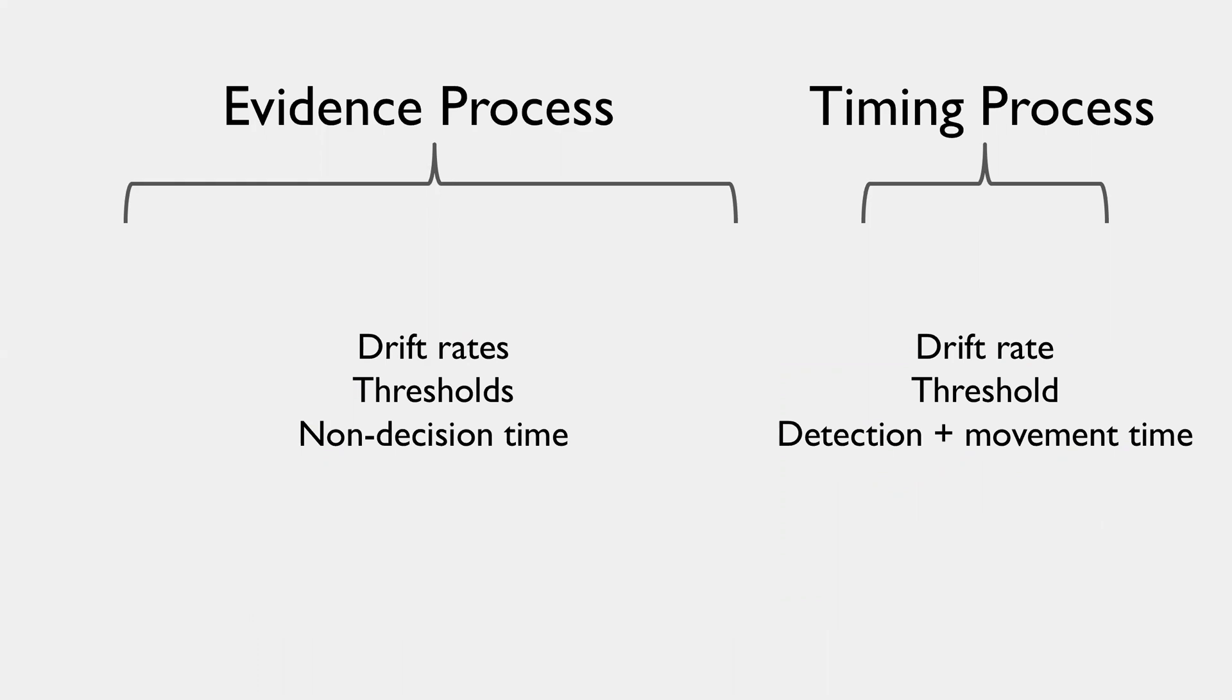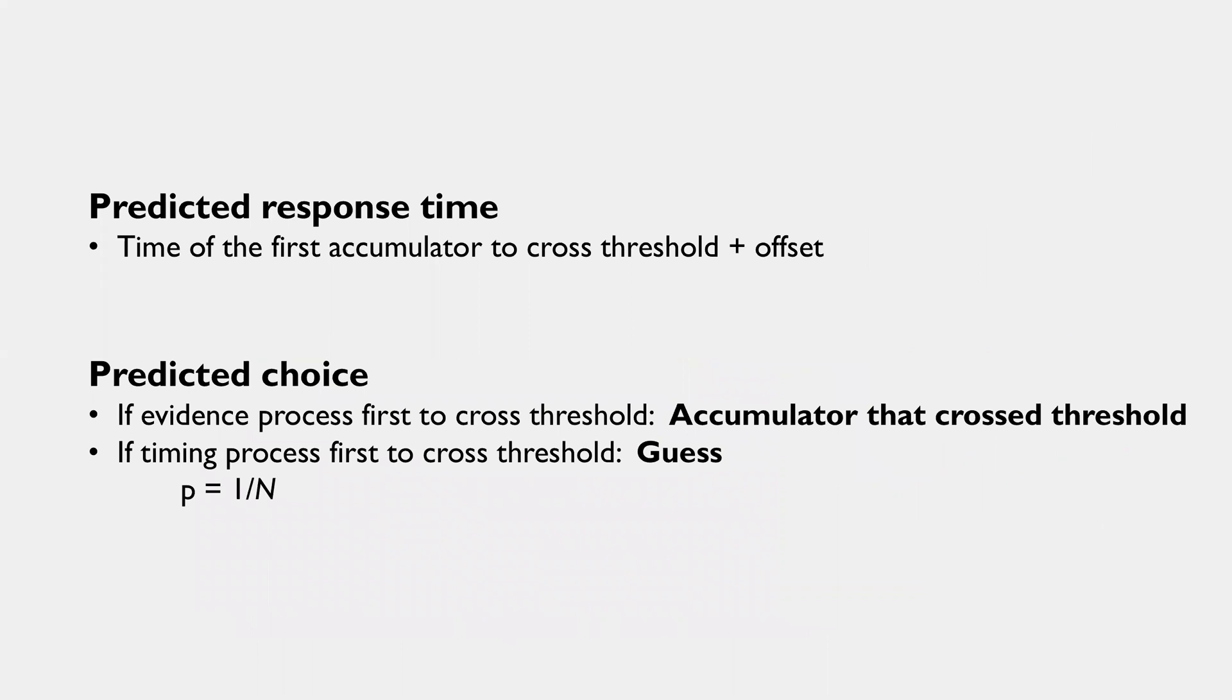And we have similar parameters in the timing process that also has a particular rate up to a threshold and some detection and movement time. The model has a simple setup for the predicted RT. And that's just the time of the first accumulator to cross threshold plus some fixed offset and the predicted choice, which depends on which of the two processes cross threshold first.